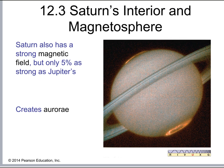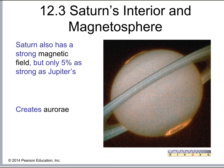Another way that Saturn is similar to Earth is that it has aurora. That's an interaction of charged particles coming from the Sun, interacting with the magnetic field of the planet and with the atmosphere of the planet. This is a good stopping point for this video — we'll continue our exploration of Saturn in the next video.